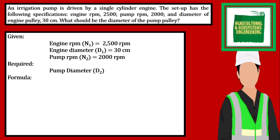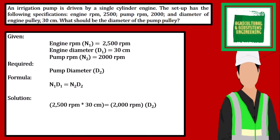The formula that we are going to use is: N1 times D1 is equal to N2 times D2. We simply use direct substitution in solving the problem, giving us N1 of 2500 rpm times D1 of 30 cm is equal to the product of N2, which is 2000 rpm, and D2. We derive the equation to solve for the pump diameter.